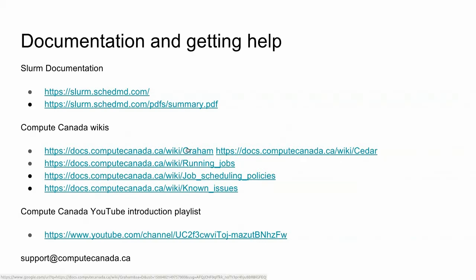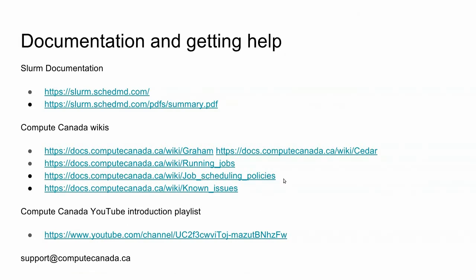Every system that uses Slurm is configured to run in a specific, highly customizable way depending on the hardware. The documentation for the specific systems we're talking about today — the general purpose systems GRAM and CDER — can be found at docs.computecanada.ca. Each system has its own page where you'll find the node layout of available resources. You'll also find links to running jobs, which is a prerequisite to this presentation, and links to job scheduling policies, which is really what we're going to be talking about today.